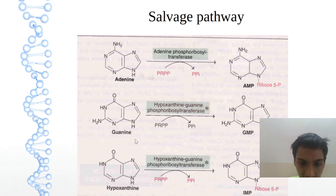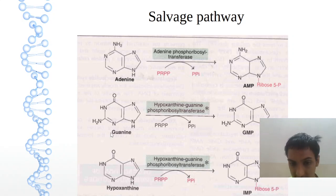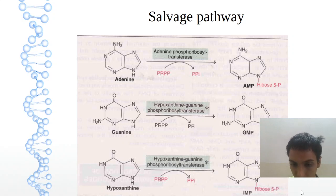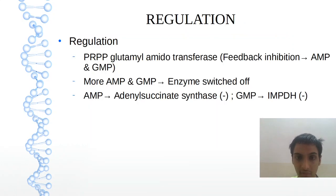Guanine and hypoxanthine use the same enzyme. Guanine will form GMP. Hypoxanthine will form IMP. Now, the regulation.